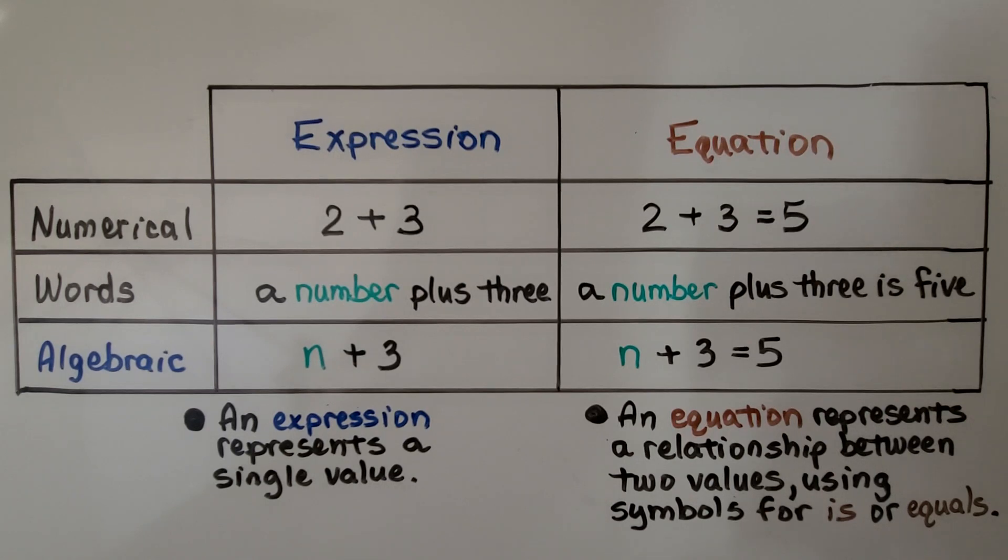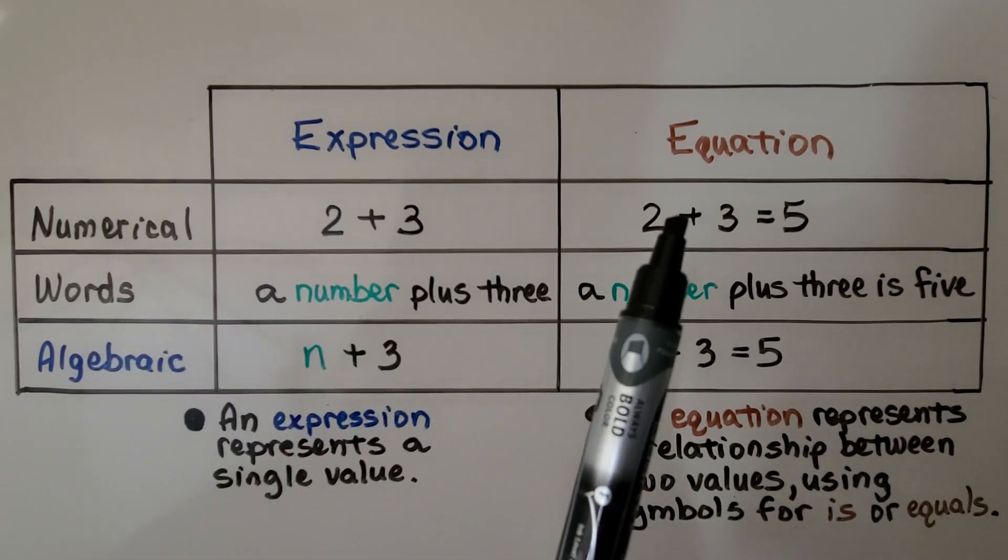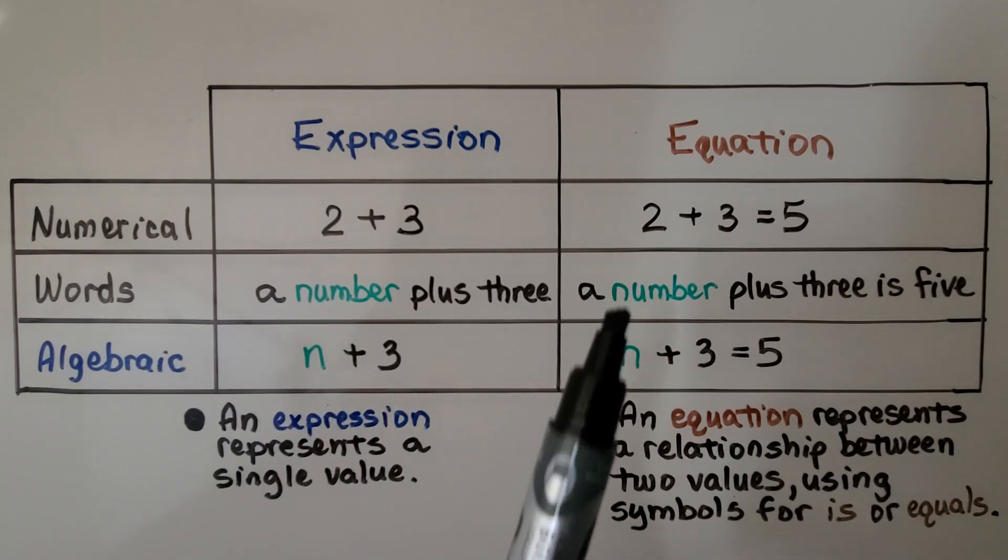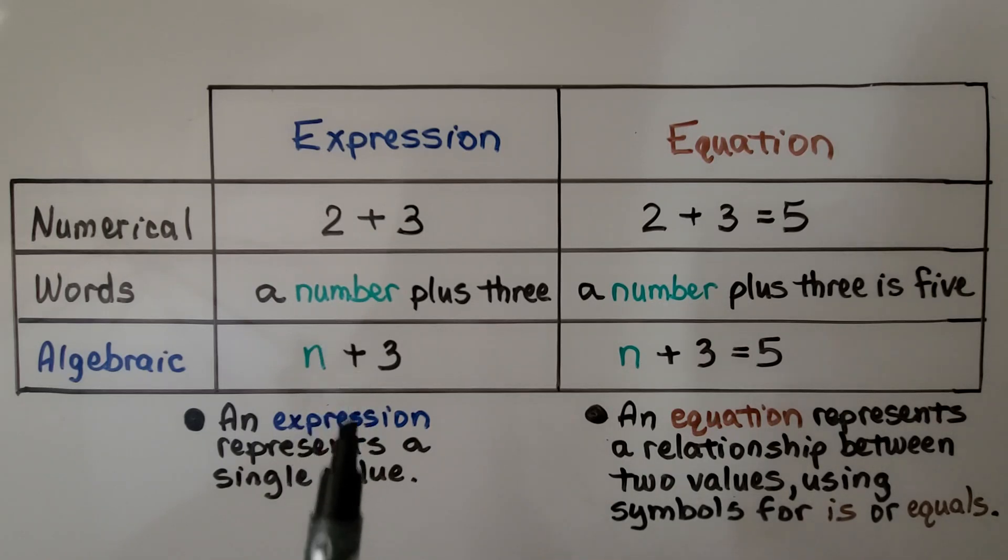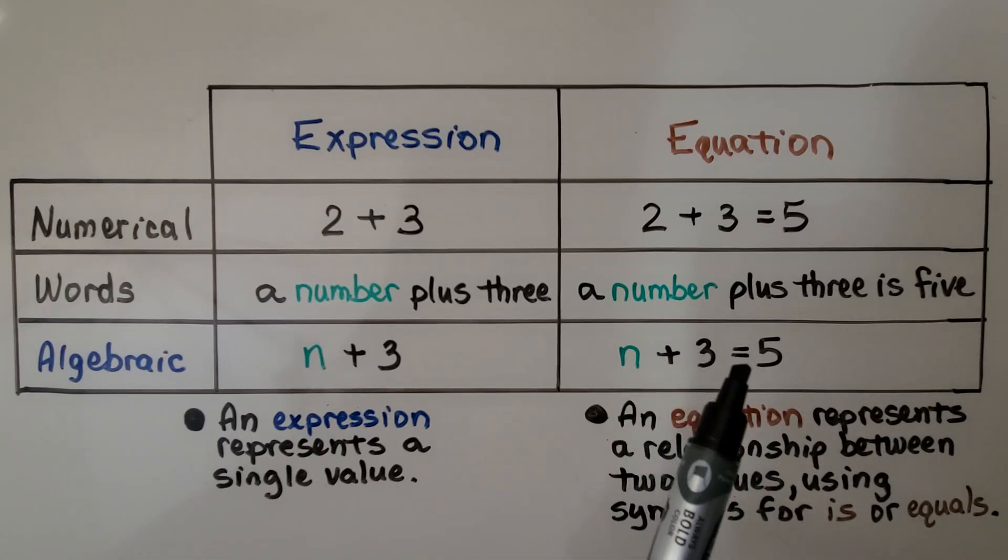This table shows numerical expressions and numerical equation, words as an expression and words as an equation, and algebraic expressions and algebraic equations. An expression represents a single value. An equation represents a relationship between two values using symbols for is or equals or is equal to.